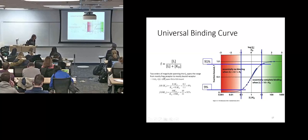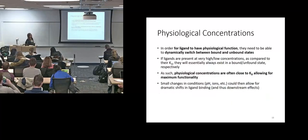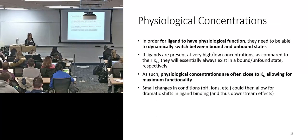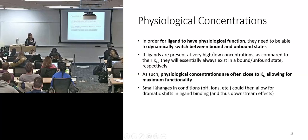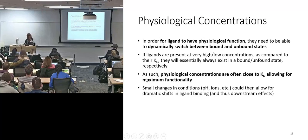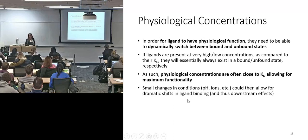So two orders of magnitude spanning the KD spans the range from mostly free receptor to mostly bound receptor. In order for ligand to have physiological function, it has to be able to dynamically switch between bound and unbound. If it's present at a very high or very low concentration relative to its dissociation constant, it will always be bound or always be unbound respectively. So essentially, either nothing's happening or something's turned on all the time, sort of a cancer-like setup. So physiological concentrations are often very close to KD to allow for maximum functionality. And if you have changes in pH or ions, anything that shifts this will have negative downstream consequences.